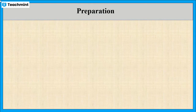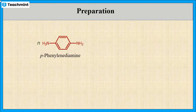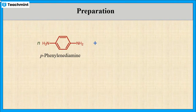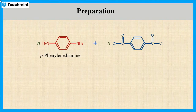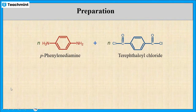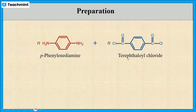Now, let us see the synthesis of Kevlar. Kevlar is synthesized by the condensation polymerization of paraphenylenediamine and terephthaloyl chloride. This is the structure of paraphenylenediamine and terephthaloyl chloride.